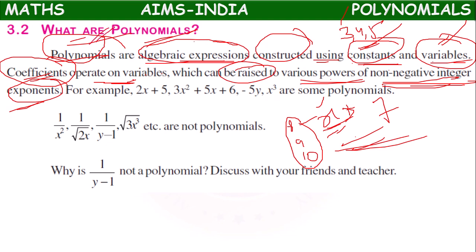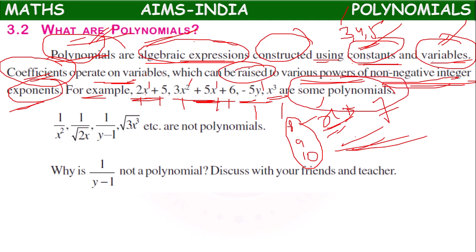Polynomial means it consists of constants, variables, coefficients operating on variables, and variables raised to positive exponents. With all these combinations, if we construct an algebraic expression, it is called a polynomial. For example, 2x plus 5 (two terms), 3x squared plus 5x plus 6 (three terms), minus 5y (one term), x cubed (one term). All of these have variables and constants, and each expression has variables raised to positive exponents. So these are all examples of polynomials.